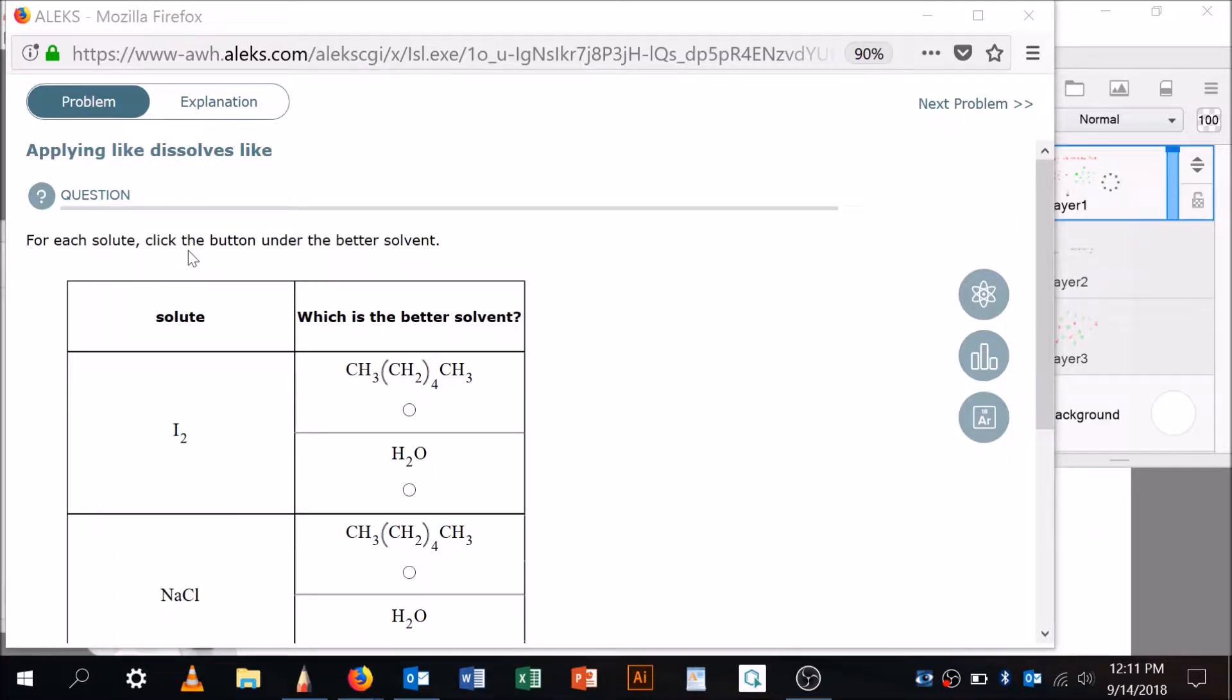They go like this: for each solute, click the button under the better solvent. So here's the solute, and here's the solvent. And so we have to say, which is iodine going to dissolve in better?